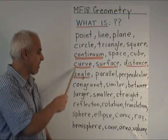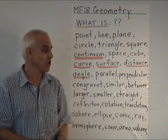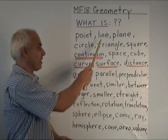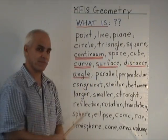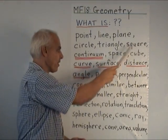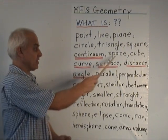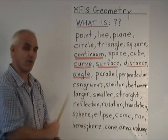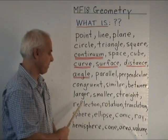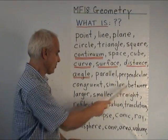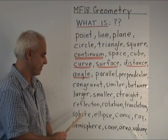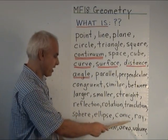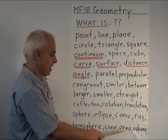So one of the challenges is to come up with definitions, proper definitions, of many terms such as what is a point, line, a plane, a circle, a triangle, a square. What is the continuum? What is space? What is a cube? What is a curve, a surface? What do we mean by distance or angle? What do parallel and perpendicular mean? Congruent, similar, between, larger, smaller, straight, reflection, rotation, translation, sphere, ellipse, conic, ray, hemisphere, cone, area, volume.